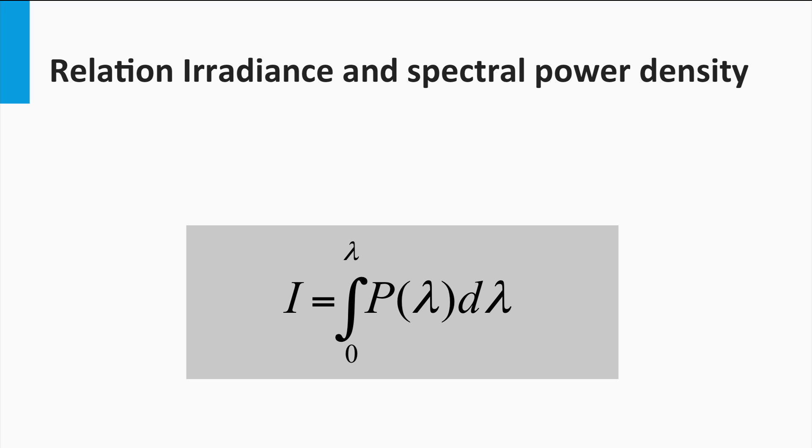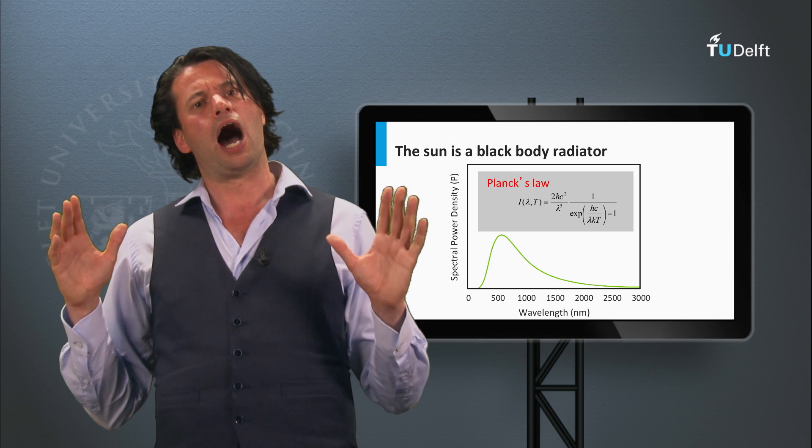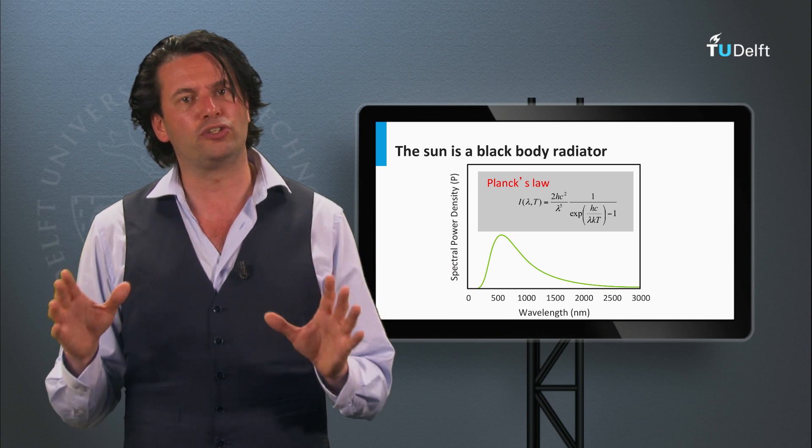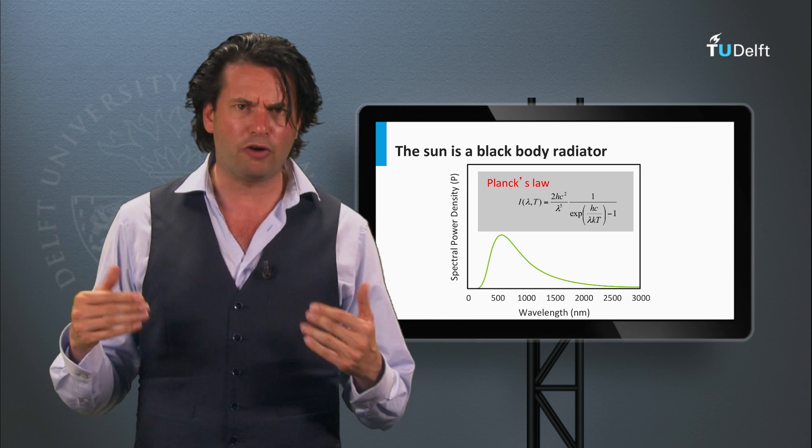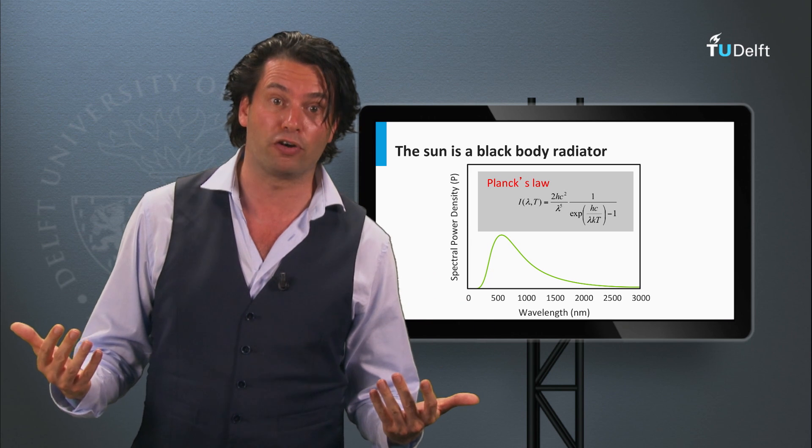Next, we introduce the spectral power density P, a quantity which has spectral information in contrast to the irradiance. The spectral power density is the incident power per unit area and per unit wavelength. The irradiance and spectral power density are related to each other with this simple formula. How does the spectrum of the Sun look like? Or in other words, how does the spectral power density function look like?